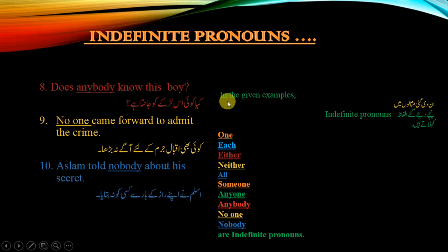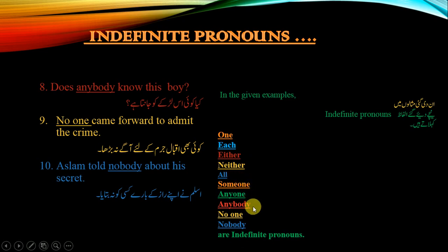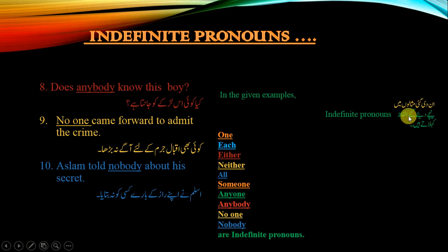In the given examples, one, each, either, neither, all, someone, anyone, anybody, no one, nobody are indefinite pronouns. ان دیئے گئے مثالوں میں یہ الفاظ indefinite pronouns کہلاتے ہیں۔